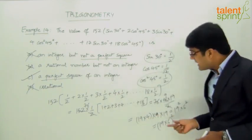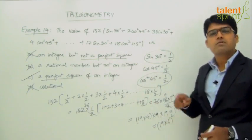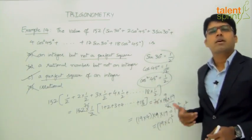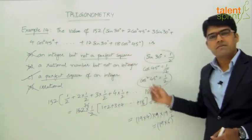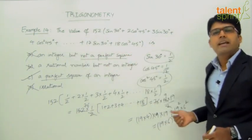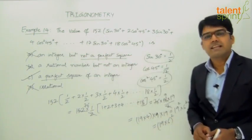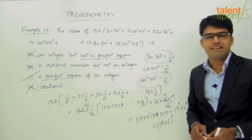By any chance, if we are unable to express the value here in terms of some square like x square or y square, then we would go for option A. That is, an integer but not a perfect square. But since we have got it in the form of a square here, we can say that option C, a perfect square of an integer, is the correct answer.